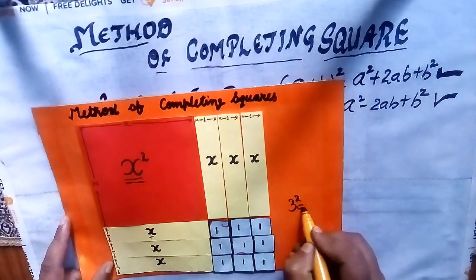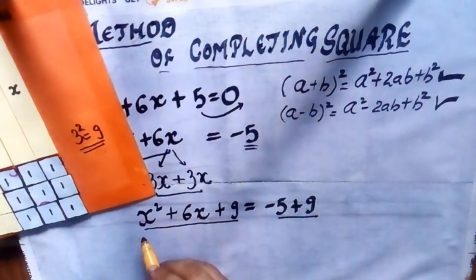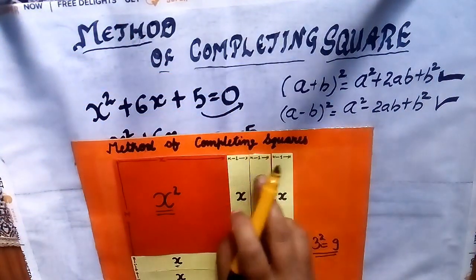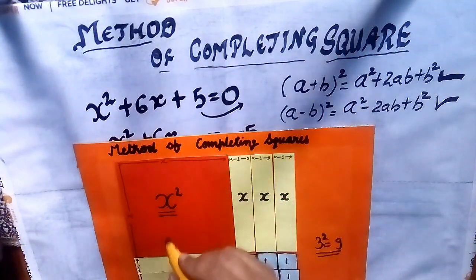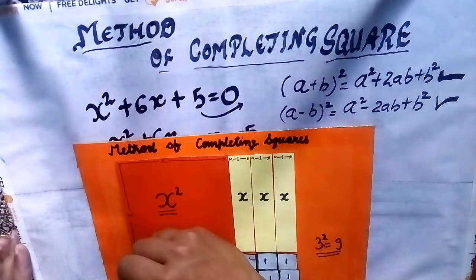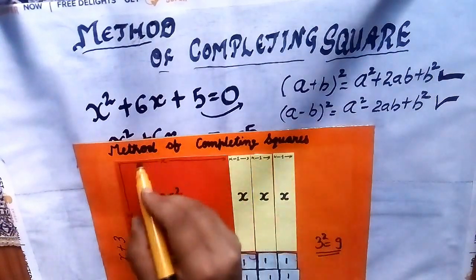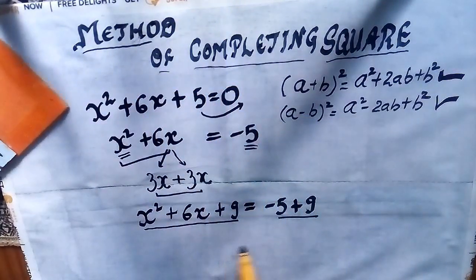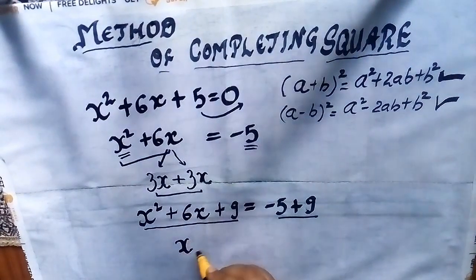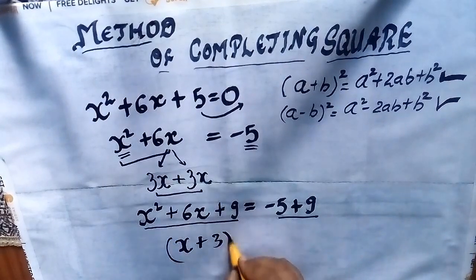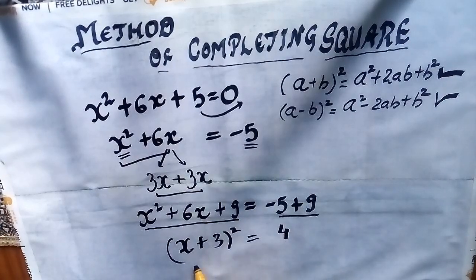We added 3² = 9. Now what happened by adding this to both sides? Let us see with the figure. The side of the square becomes x + 3 — you can see horizontally it is x + 3 and vertically also it is x + 3. So our left hand side becomes (a + b)², that is (x + 3)².